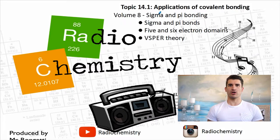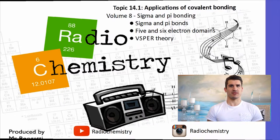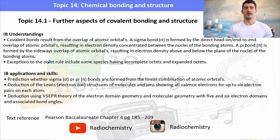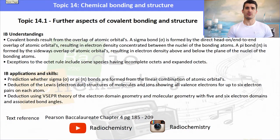14.1, higher level covalent bonding. We look at sigma and pi bonds, molecules with 5 and 6 electron domains, and then we talk about VSEPR theory as well. The IB understandings and applications focus around what is a sigma bond and what is a pi bond and how they're formed, and then we have to talk about things with 5 and 6 electron domains, and we want to be able to write the molecular geometry — the shape and also the bond angles for those species.